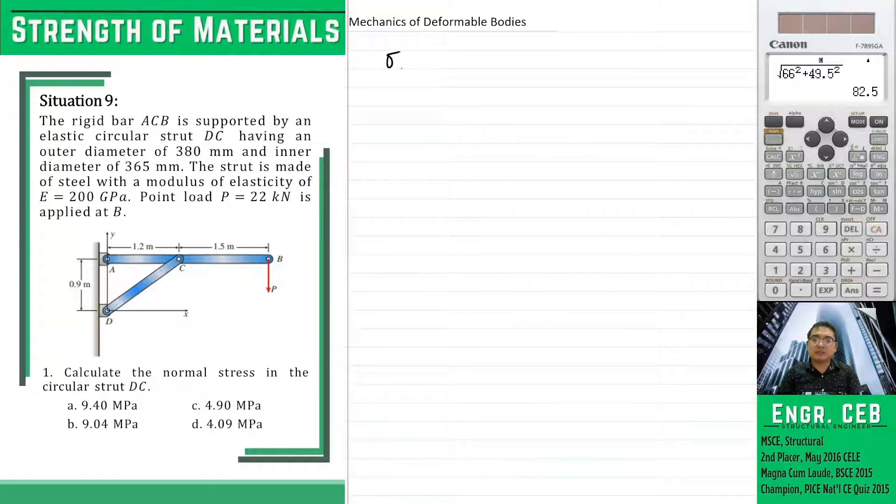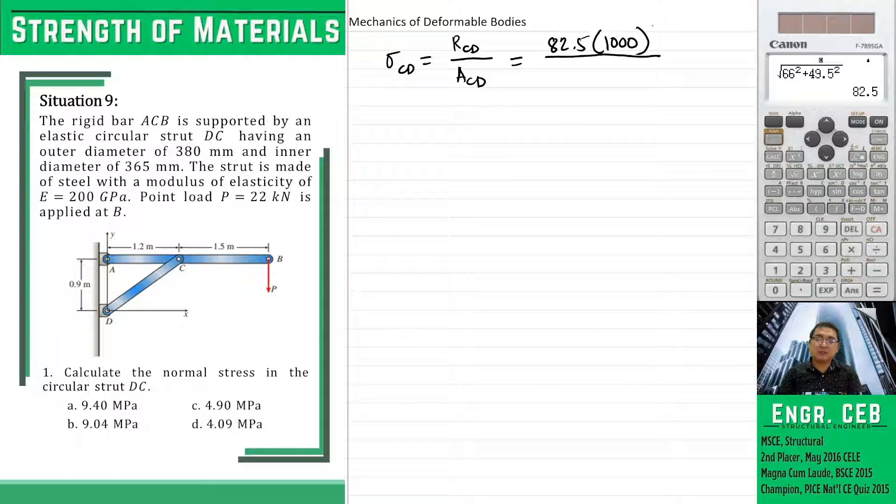We can now determine the normal stress. That is simply the force divided by the area of strut CD. So that is 82.5 kN. We multiply this by 1000 so that the units will be in Newton. And then the cross section of strut CD is a circular tube because it has an outer diameter and inner diameter.